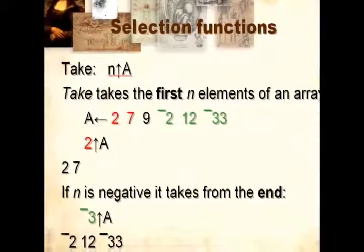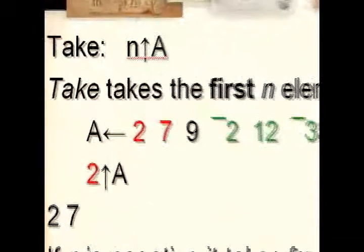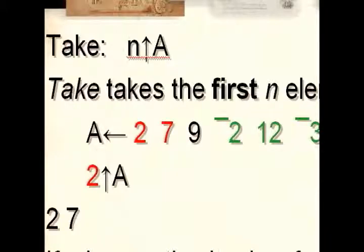For example, if we want to take the n first elements of an array, we use the function Take, which is the up arrow in APL, found on the Enter key of the keyboard. Take takes the first n elements of an array. For example, if A consists of six elements, doing a 2 Take on A will return the two first elements.